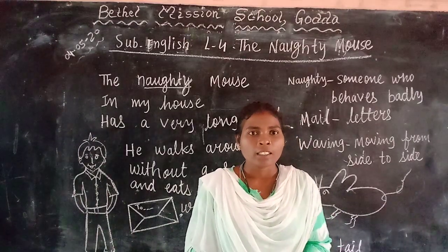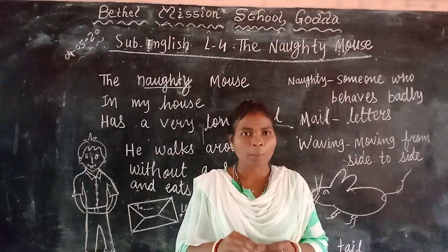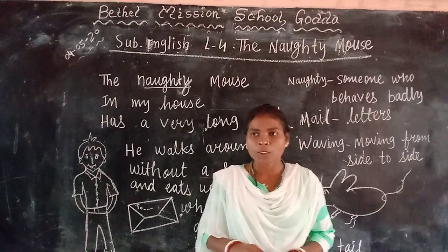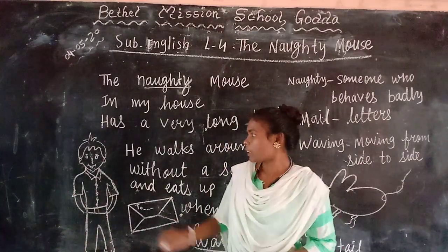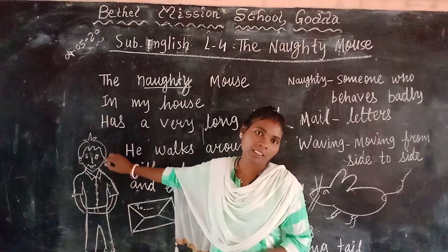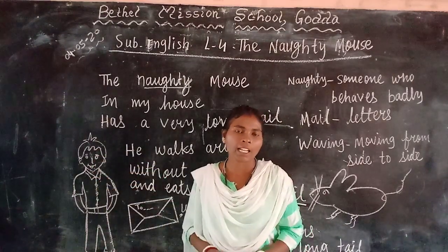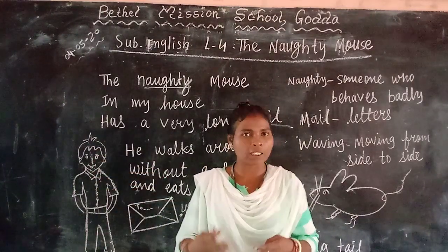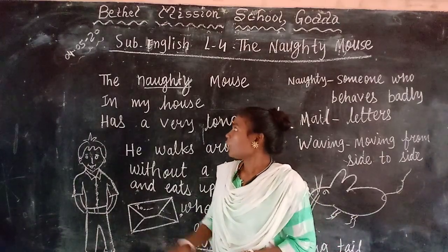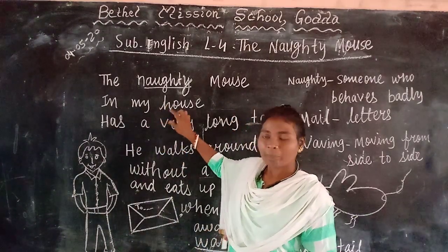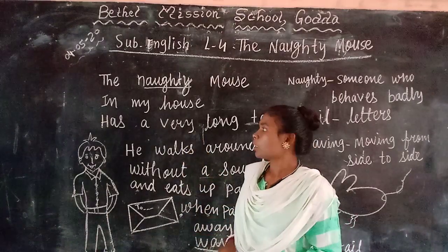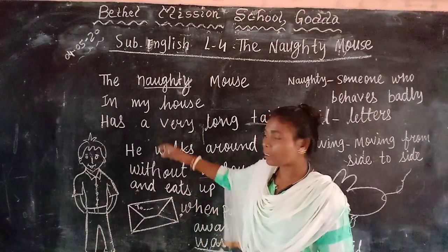Today we learn about mouse naughtiness. This boy — can you see this boy? — is telling about the mouse and about naughtiness. So, in this poem, can you see this poem I have written down here? Let me read the paragraph.